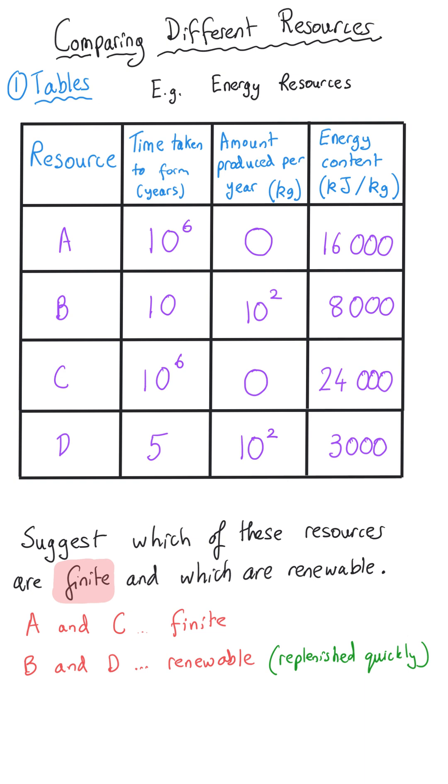We could also make a numerical statement and say that for instance resource A takes a million years to form resource B takes only 10 years and so that is 10 to the 5 times longer that it takes resource A to form.